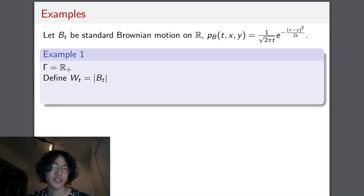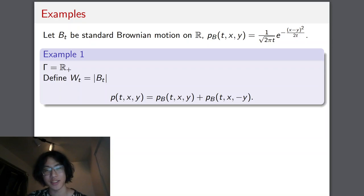So here's some simple examples. First, let's take the metric graph to be r plus, which is just one vertex and one edge with infinite length. Well, in this case, we can define our Brownian motion on it to simply be the absolute value of the standard Brownian motion on r. And to compute the transition density, this would just be the transition density from x to y, plus the transition density from x to minus y.